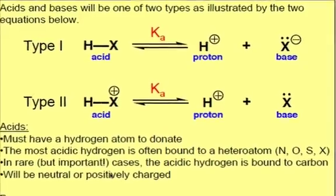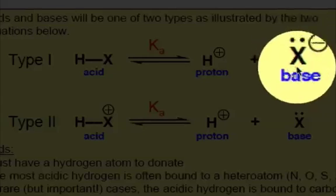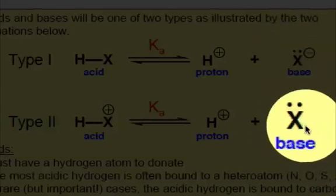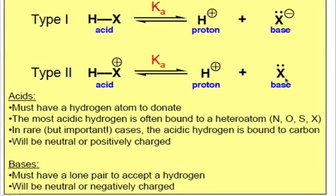Bases, similar to acids, are of two types, and they're the conjugates of the acid types we saw previously. The bases will either be negatively charged or neutral, and all bases must have a lone pair to accept the hydrogen. For these acid-base reactions, that base frontier orbital is going to be an n orbital.